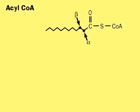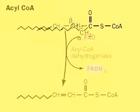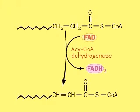A four-step process removes two carbon units from fatty acids. In the first step, acyl-CoA dehydrogenase and the oxidizing agent FAD convert acyl-CoA to beta-enoyl-CoA, an unsaturated acyl-CoA.